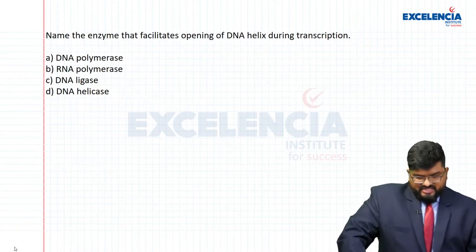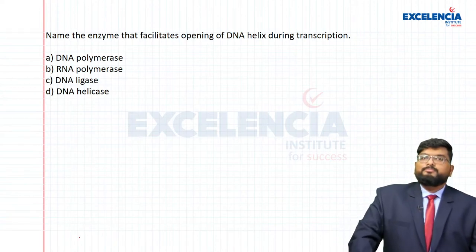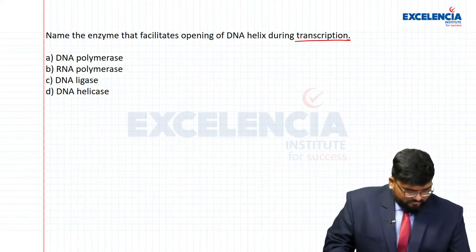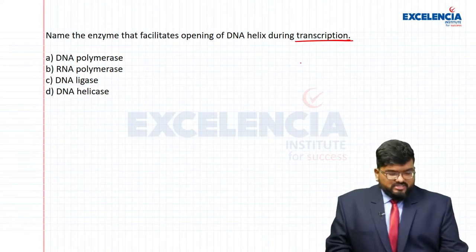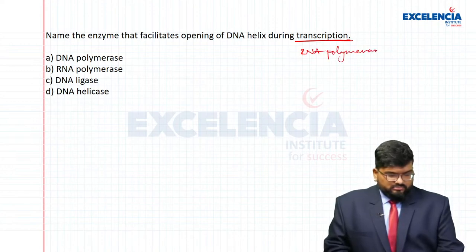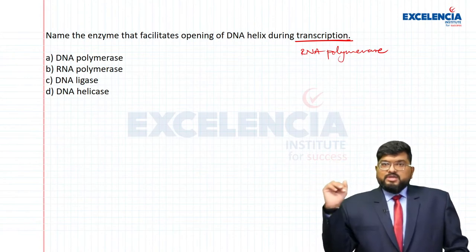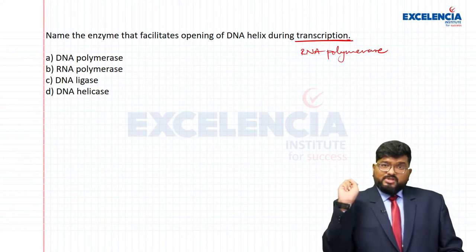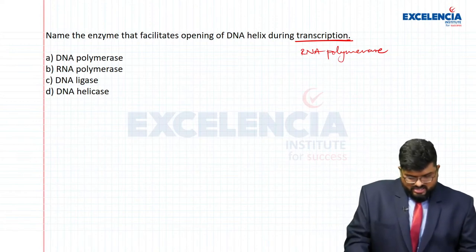Name the enzyme that facilitates the opening of the DNA helix during transcription. RNA polymerase is the sole enzyme of transcription — one type in prokaryotes; RNA polymerase 1, 2, and 3 in eukaryotes, with RNA pol 2 responsible for transcription of mRNA. Everything is done by RNA polymerase.